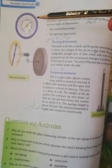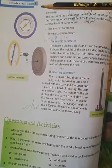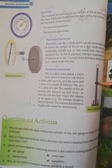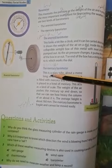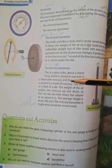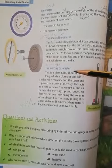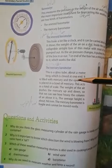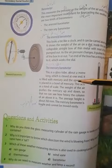This diagram shows the aneroid barometer. The mercury barometer is a glass tube about a meter long which is closed at one end. It is filled with mercury.